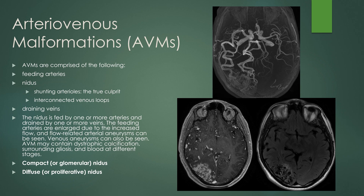This is an example of an AVM shown on MRA. You can see flow coming to it from the PCA and the MCA. You can measure this nidus — this would be considered a compact nidus. There's a little bit of gliosis in the tissue around it, as you can see on the FLAIR image.